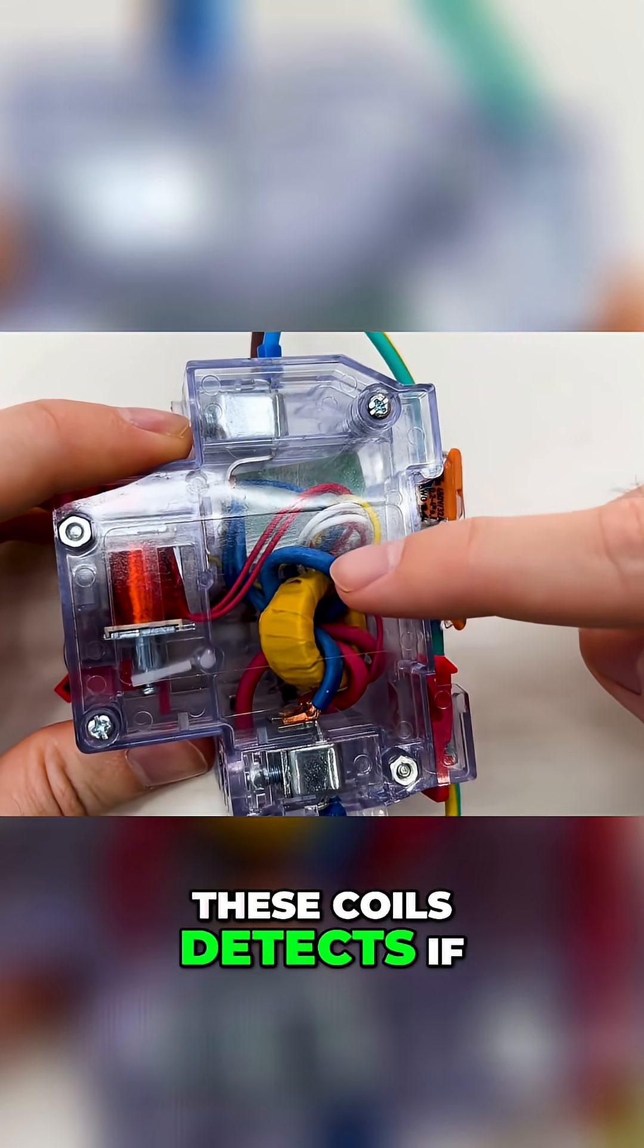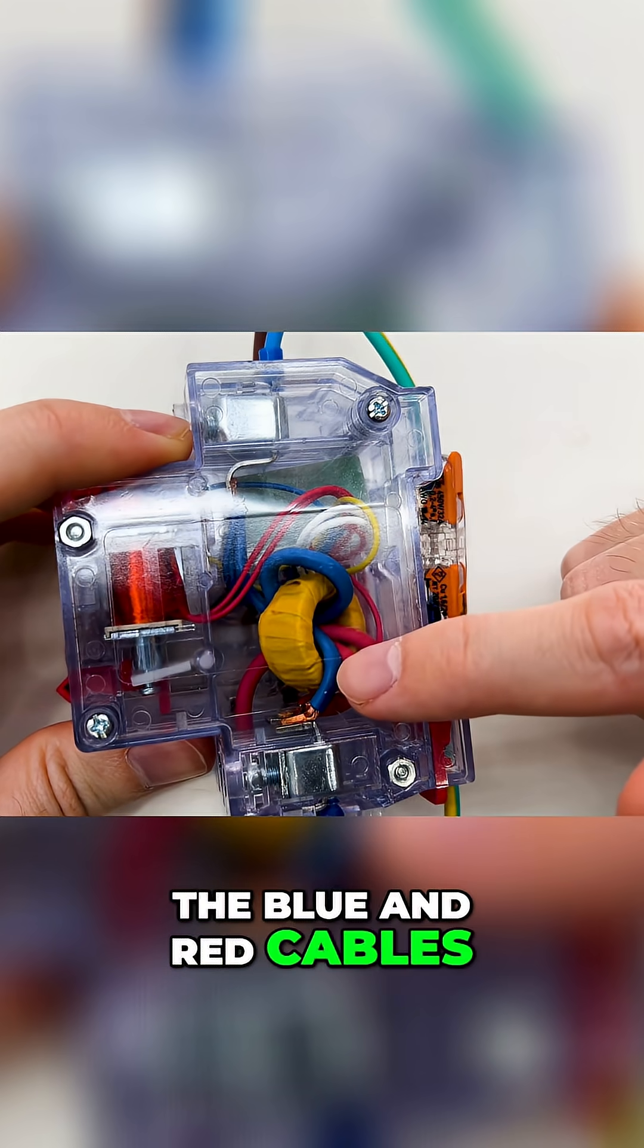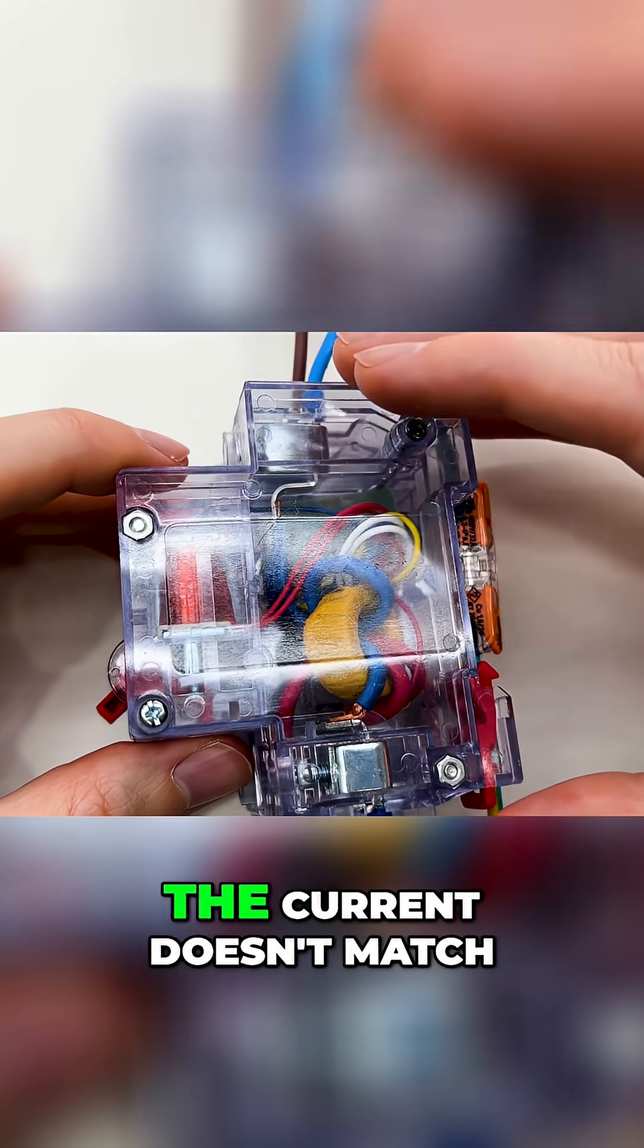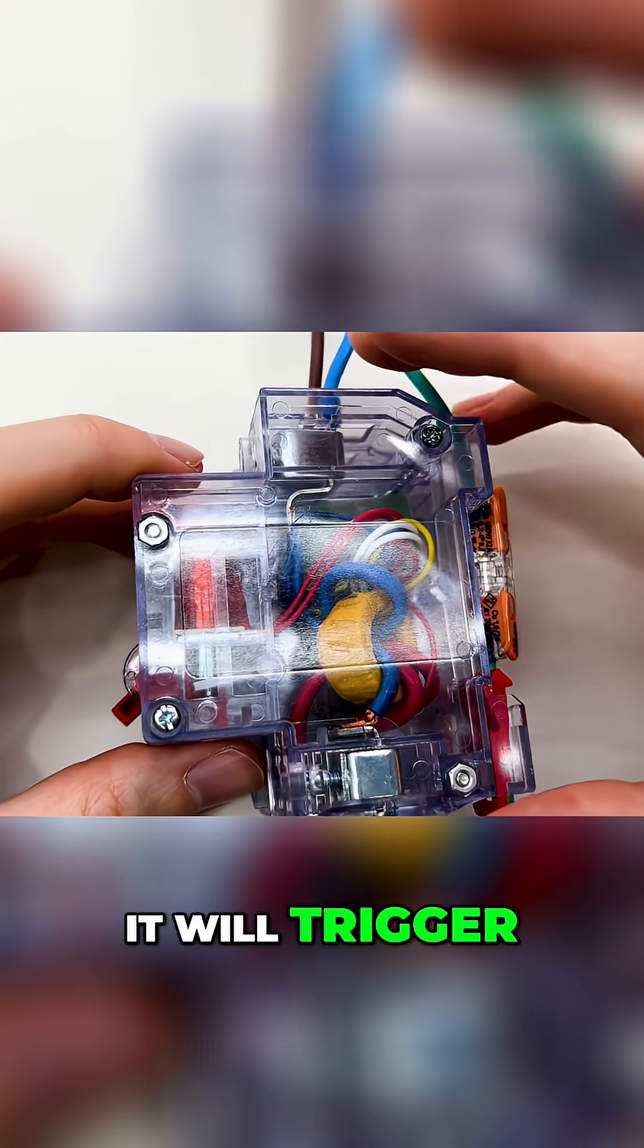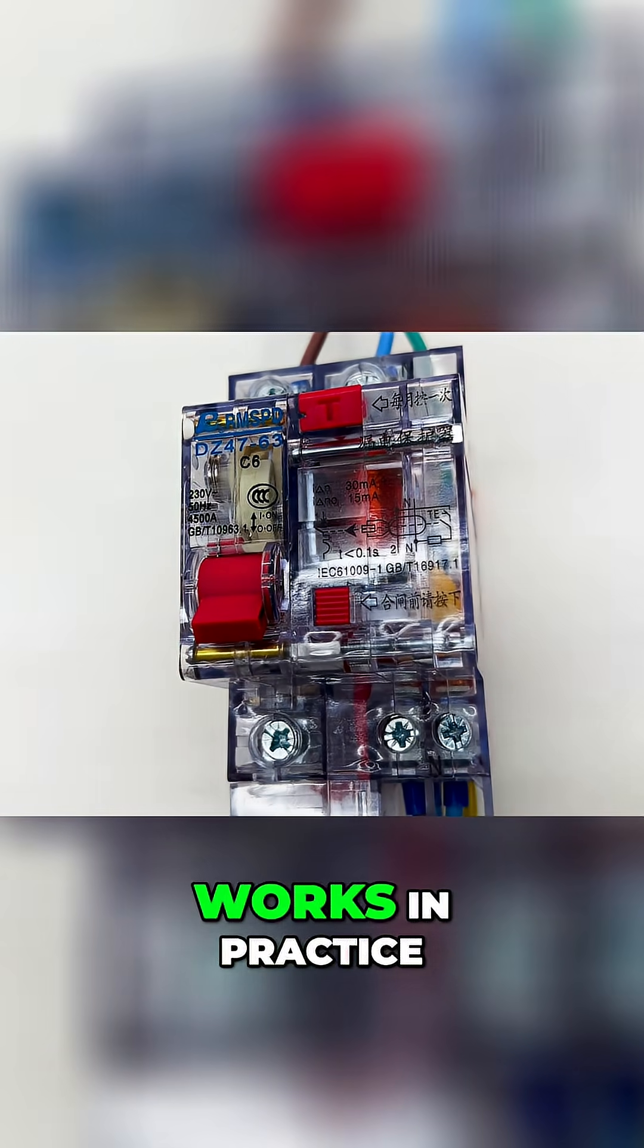These coils detect if the current going through the blue and red cables, the live and neutral cables, is the same. If it detects that the current doesn't match on those two cables, it will trigger. I will show you examples how it works in practice.